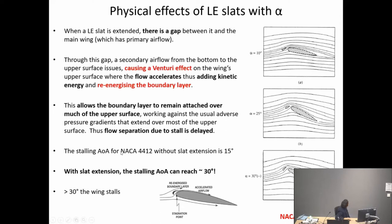For the NACA 4412, without the leading edge slat the stall angle is about 15 degrees. Using the leading edge slat, you can increase that to about 30 degrees — clearly a huge advantage. The key idea is energizing the boundary layer to delay flow separation, allowing the wing to fly effectively at a higher angle of attack and delaying the stall.